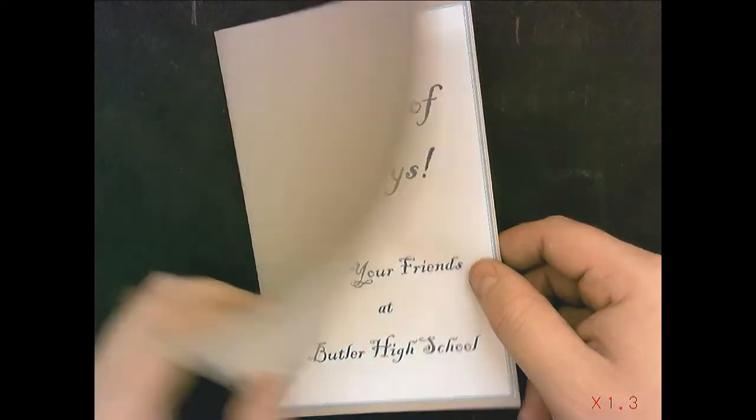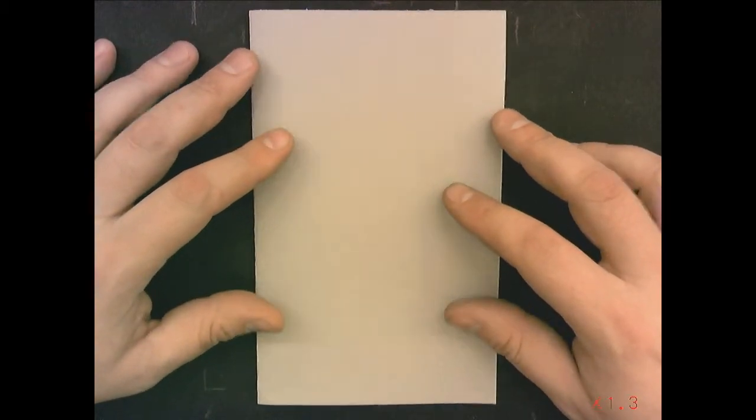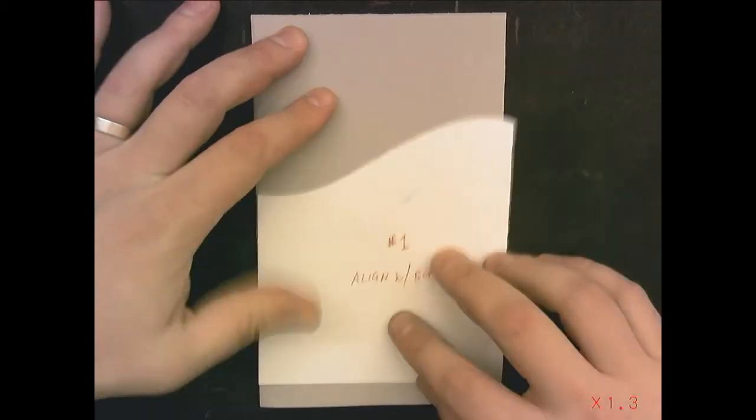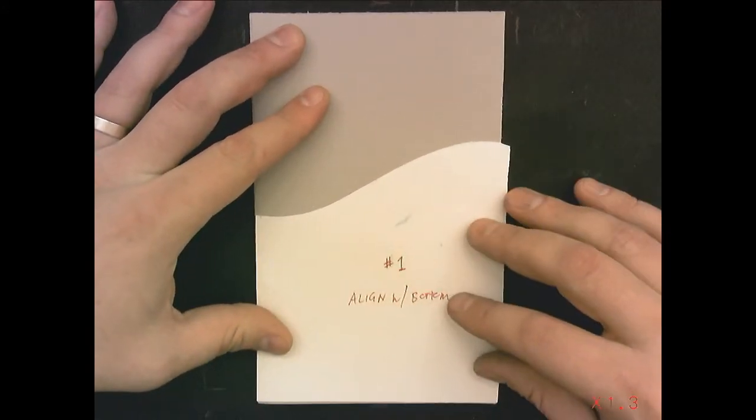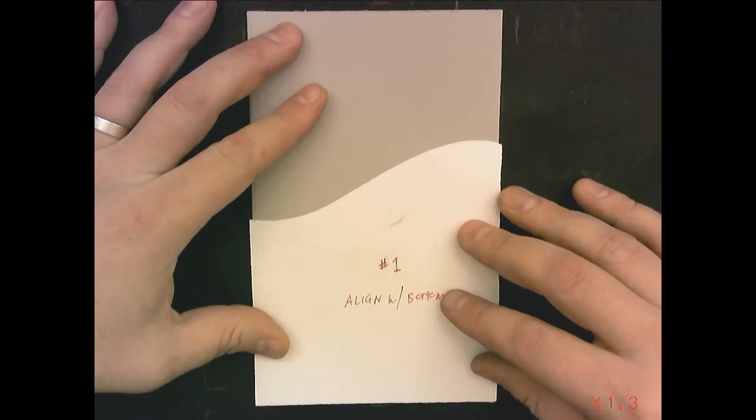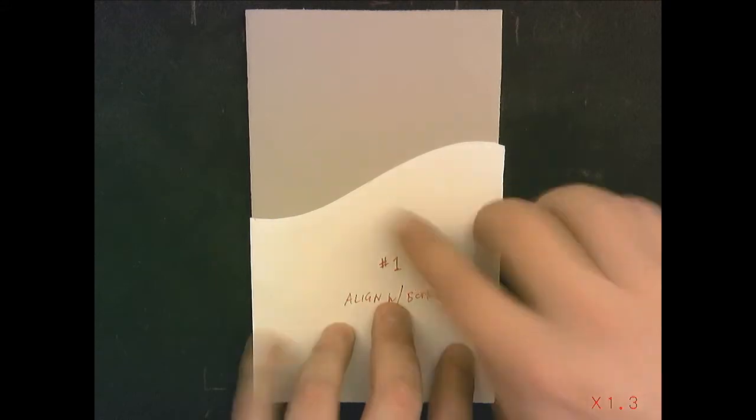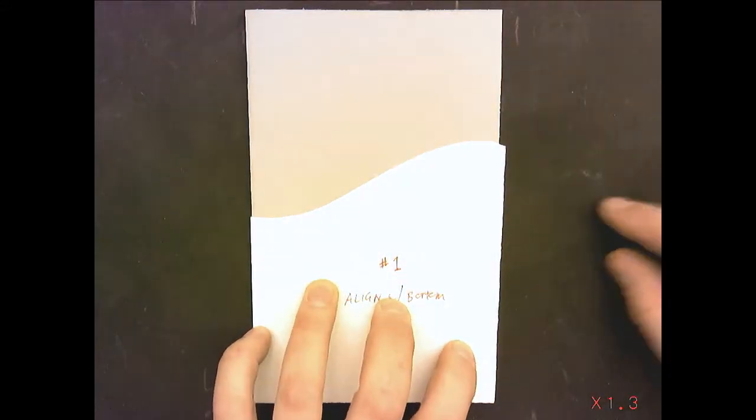So stencil number one. We're going to take our greeting card and we're going to make sure that it's in the right format and we're going to design the front cover. So I'm going to grab my stencil number one and it says align with the bottom. So I'm going to align it with the bottom edge of the card. This stencil is going to mask out the bottom area so that it shows the top here.